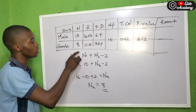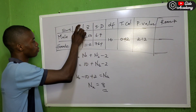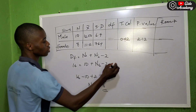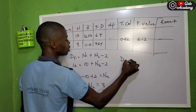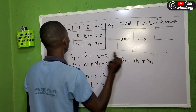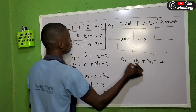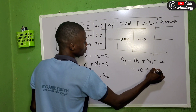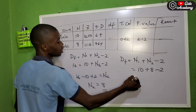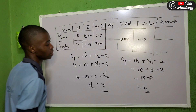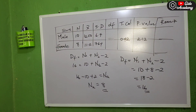That is how you calculate the number of females if it wasn't given to you. Now let's assume they give us the number of males and females but the degree of freedom wasn't given. You write: df = n1 + n2 - 2. Number of males = 10, number of females = 8, so 10 + 8 - 2 = 16. So 16 is our degree of freedom.